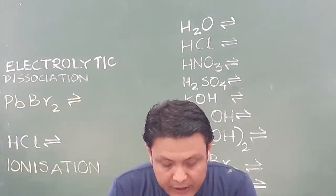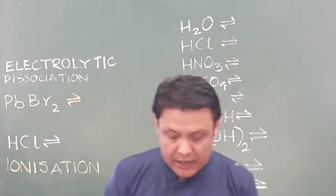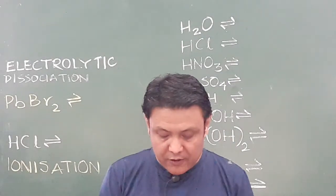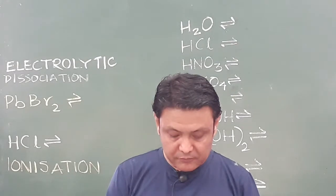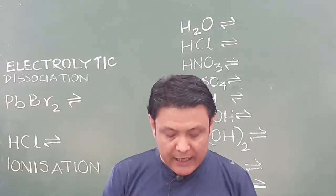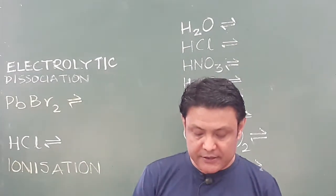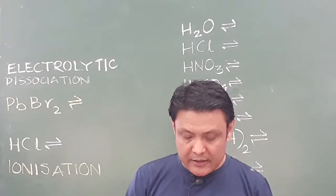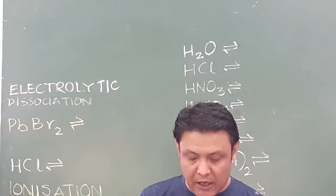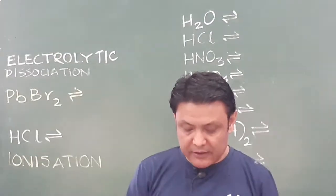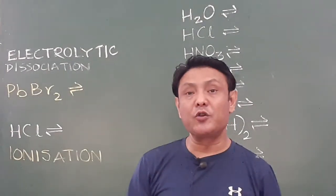Number three: all ions carry an electric charge and are responsible for the flow of current through the solution. And the last one: the number of positive charges on the ions equals the number of negative charges, and thus the solution of an electrolyte is in equilibrium.